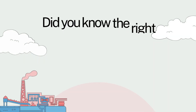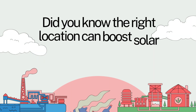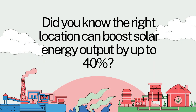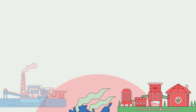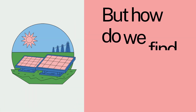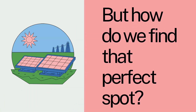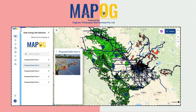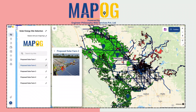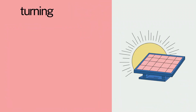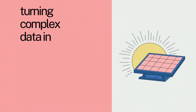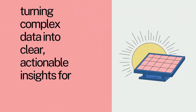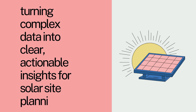Did you know the right location can boost solar energy output by up to 40%? But how do we find that perfect spot? With MapoG, GIS does the heavy lifting, turning complex data into clear, actionable insights for solar site planning.